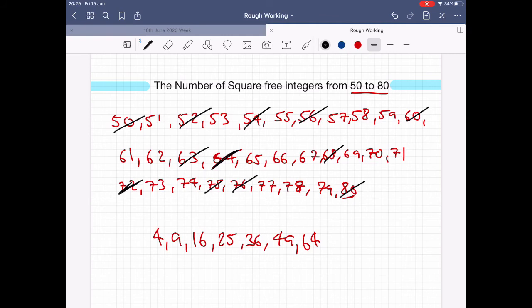Now let's just count how many we have left. That's 1, 2, 3, 4, 5, 6, 7, 8, 9, 10, 11, 12, 13, 14, 15, 16, 17, 18, 19. So the number of square-free integers from 50 to 80 would be 19. Thanks for watching and I'll see you guys next time. Bye bye.